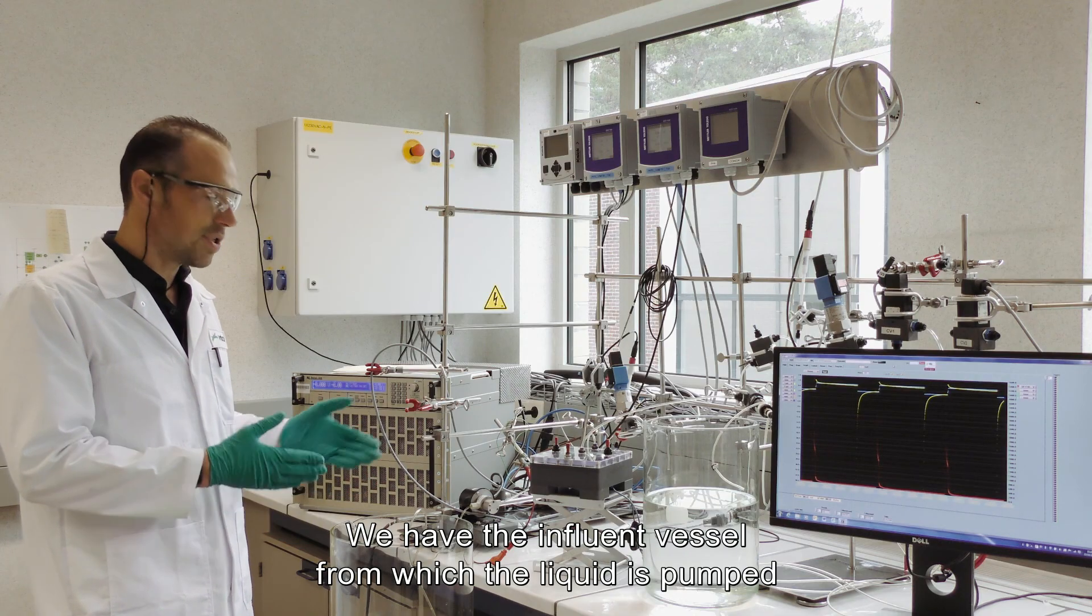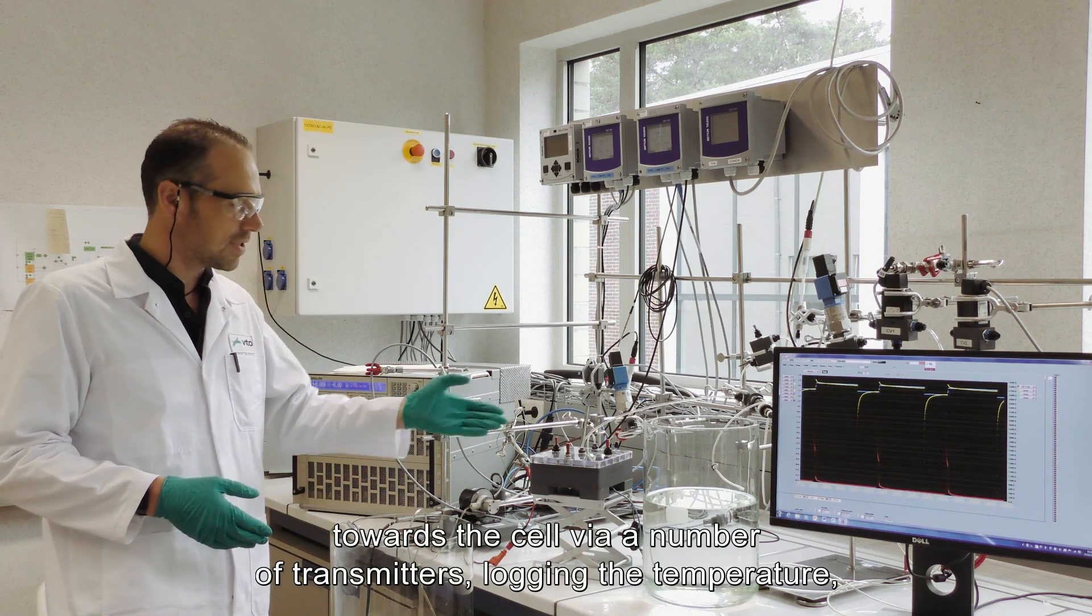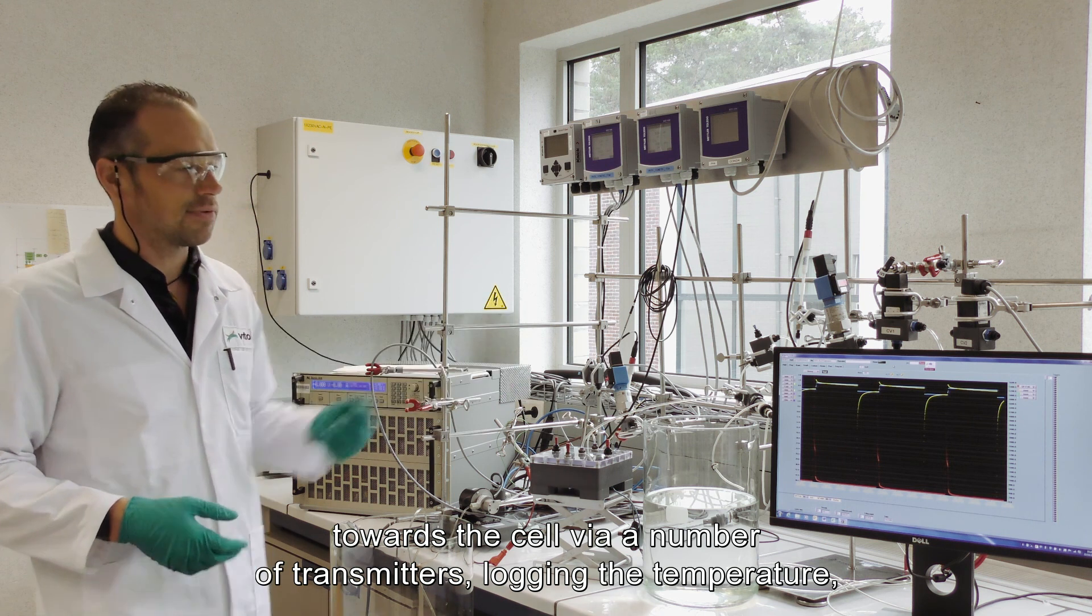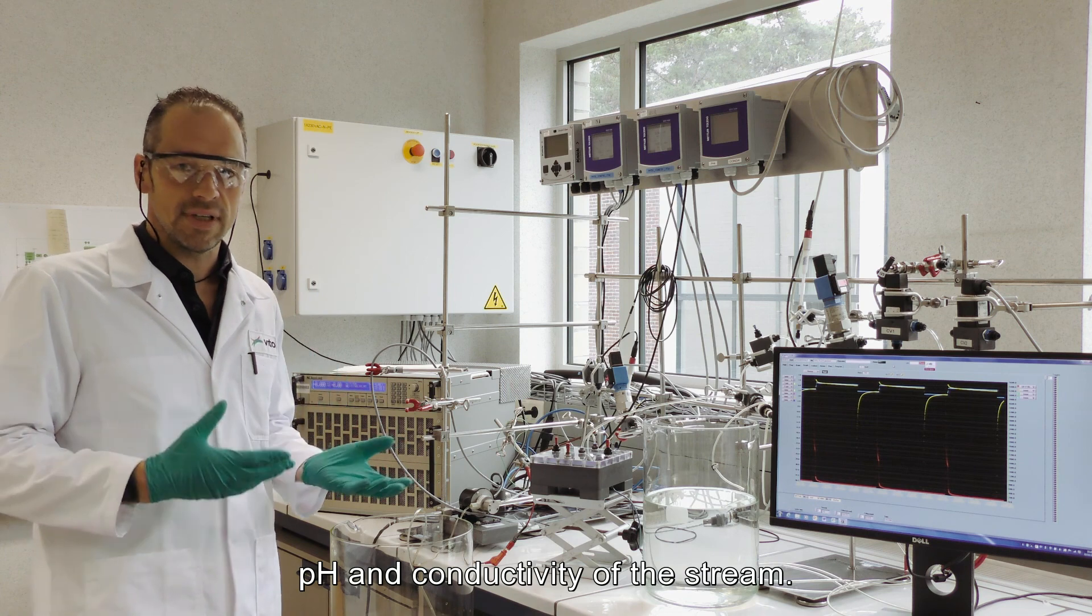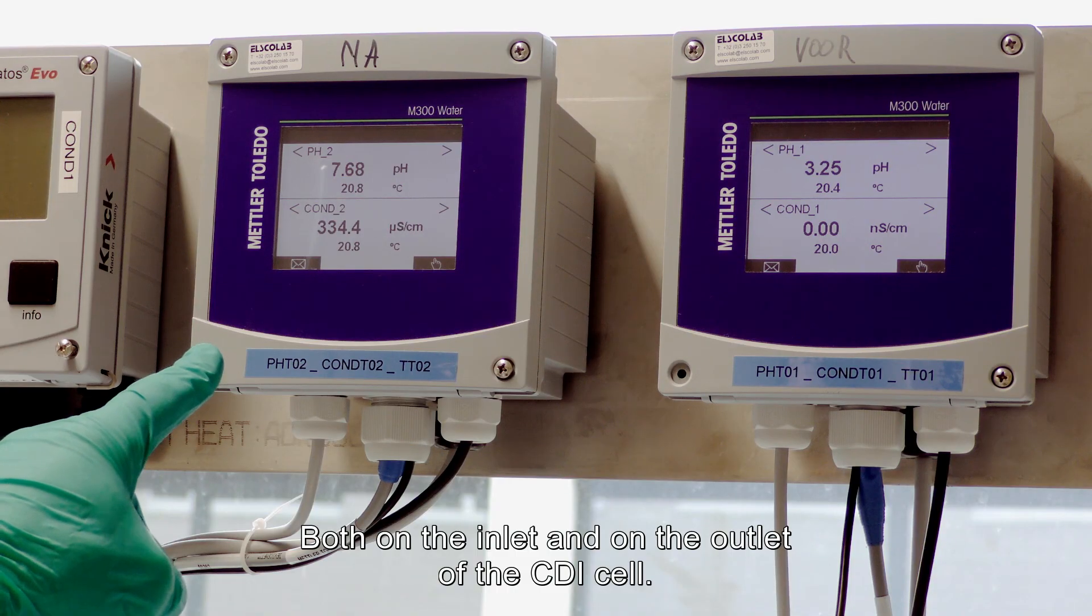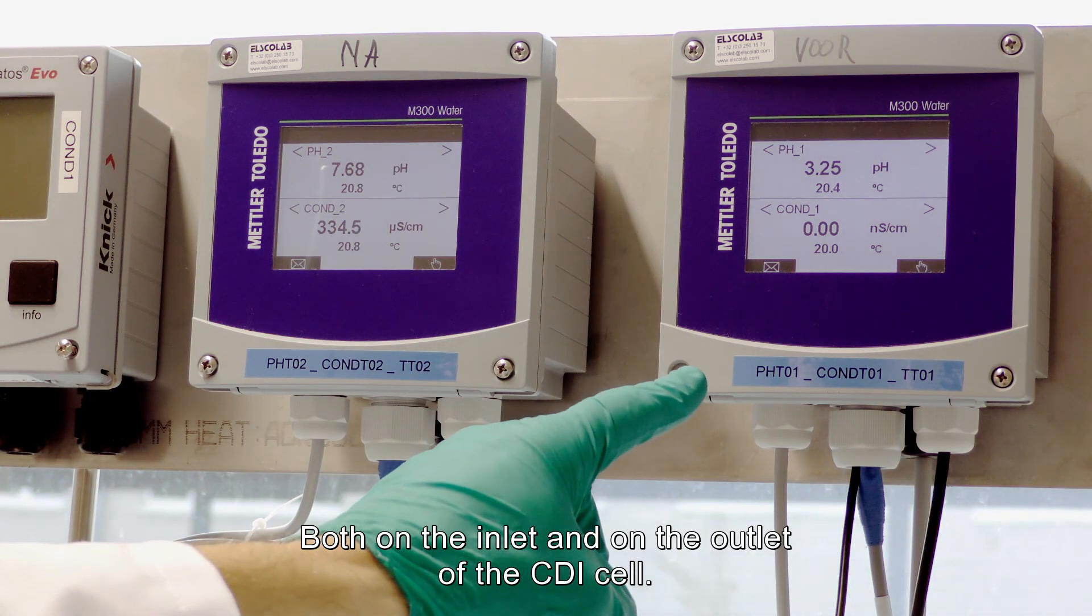We have the influent vessel from which the liquid is pumped towards the cell via a number of transmitters logging the temperature and pH of the stream, both on the inlet and on the outlet of the CDI cell.